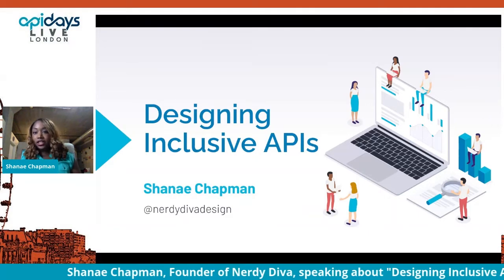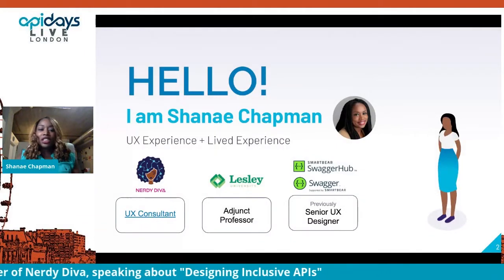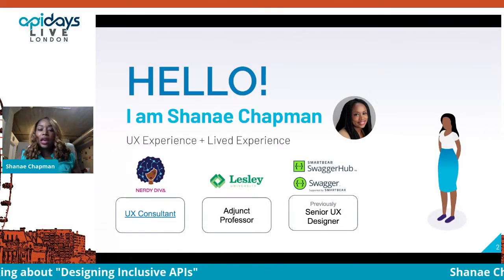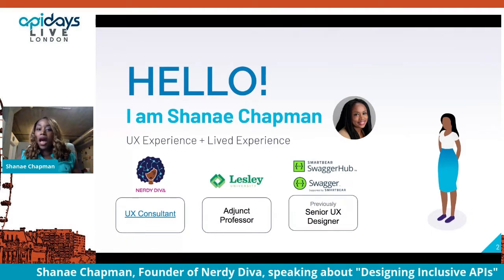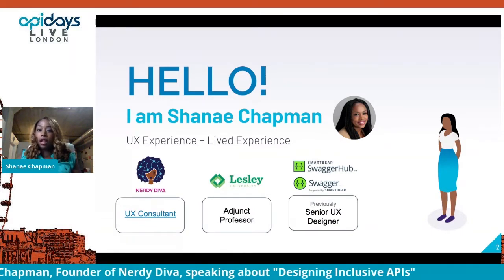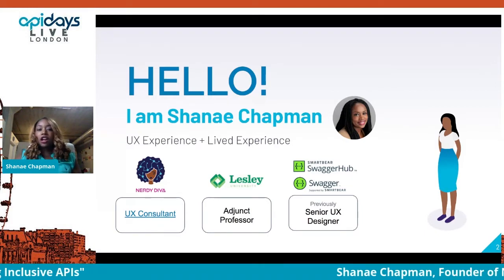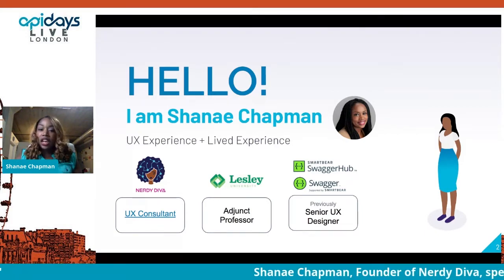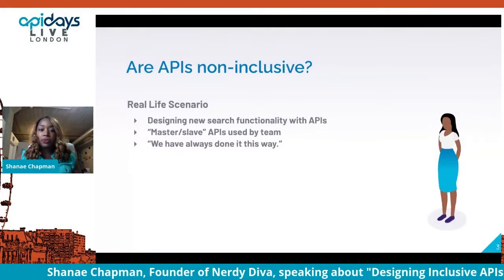Just a brief intro — my name is Shanae Chapman. I am a UX designer and consultant at my business Nerdy Diva. We do teaching like this, sharing information, and also doing research, design mock-ups, and prototypes for developer tools. I'm also an adjunct professor at Leslie University, and I previously worked on Swagger and SwaggerHub, so I know the API space and the challenges that API designers and consumers face.